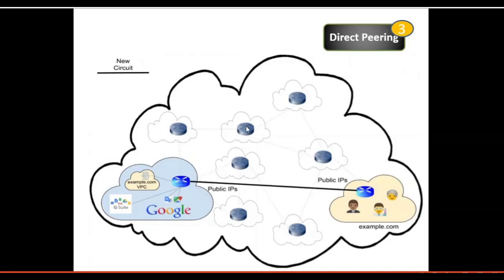Direct peering enables you to establish a direct peering connection between your business network and Google Edge network and exchange high-throughput cloud traffic. When established, direct peering provides a direct path from your on-prem network to Google services, including all Google Cloud products exposed to public IP addresses. One important note: direct peering exists outside of Google Cloud, meaning it does not use any Google Cloud resources such as interconnect connection, VLAN attachment, or Cloud Router. Google manages the peering configuration, so there is also no setup or maintenance cost.